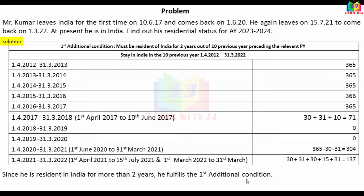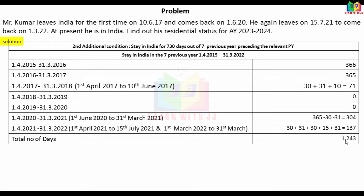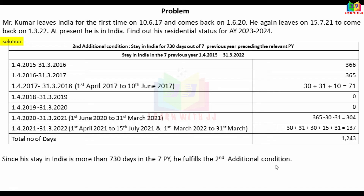Second additional condition: 730 days out of 7 previous years. Adding up all days — from years 15-16, 16-17 (71 days), 19-20 (304 days), 20-21 (365 days), and 21-22 (137 days) — total comes to 1,243 days. Since 1,243 days is greater than 730 days, the second additional condition is also satisfied.